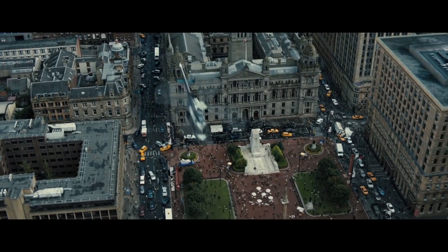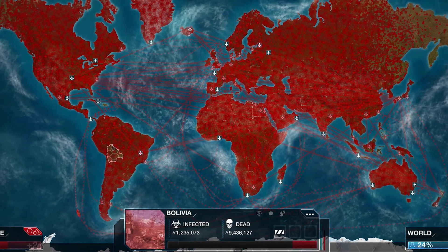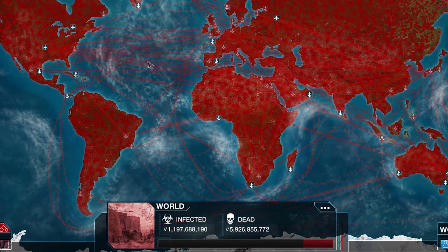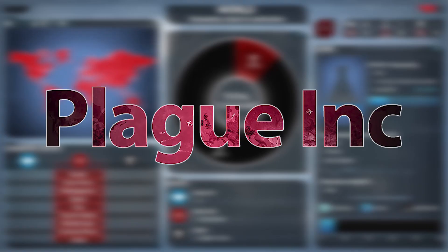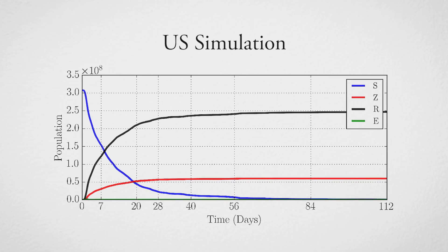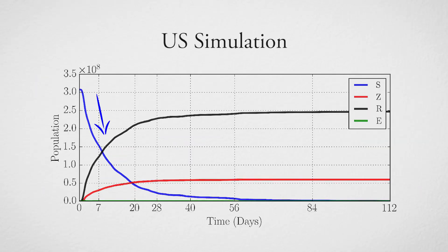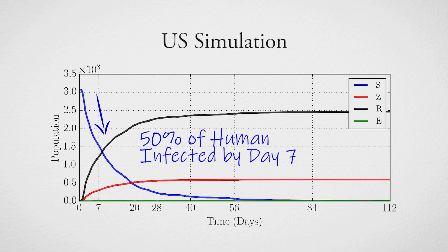As zombies interacted with humans and spread from one block to another, the population count for each block was constantly updated, just like in the viral video game Plague Inc. The rate of interactions depends on the numbers of humans and zombies — what we call population dependent. Although the overall trend turns out to be similar to the models built previously, the initial rate of infection seems to be much faster in the countrywide simulation. This means that if a zombie outbreak really happens in the United States, we will very likely die in the first few weeks.